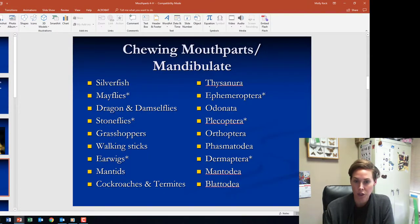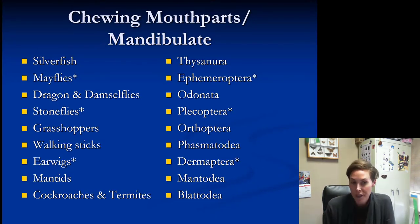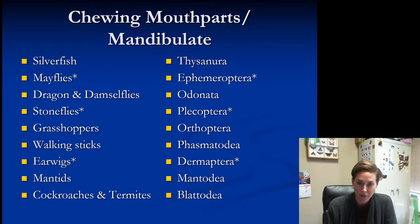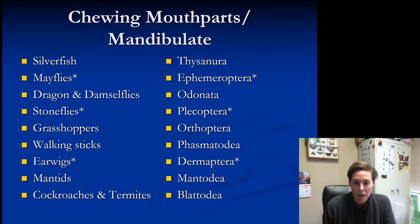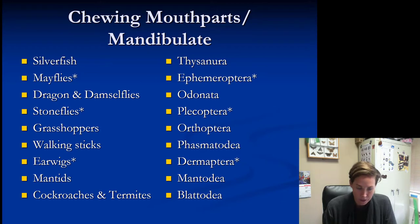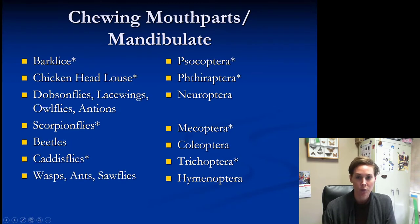Insects with chewing mouthparts include: silverfish (Thysanura); mayflies (Ephemeroptera) — intermediates and seniors need to know that one; dragonflies and damselflies (Odonata); stoneflies (Plecoptera); grasshoppers, crickets, and katydids (Orthoptera); walking sticks (Phasmatodea); earwigs (Dermaptera); mantids (Mantodea); and the cockroaches and termites group. I'd get used to knowing the order names for all of these.